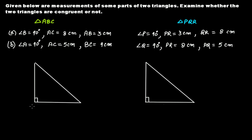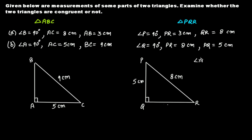In the second part, angle A is 90 degrees and angle Q is 90 degrees. The given measurements are: AC is 5 cm, BC is 9 cm, PR is 8 cm, and PQ is 5 cm. Angles A and Q are both equal to 90 degrees. However, the hypotenuse in triangle ABC is BC, which equals 9 cm, while the hypotenuse in the other triangle is PR, which equals 8 cm.